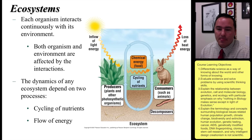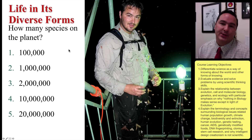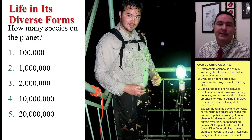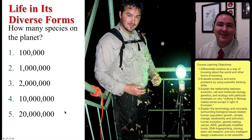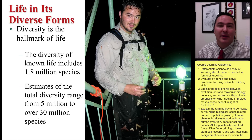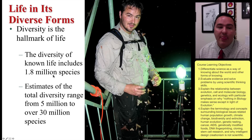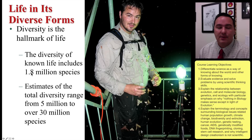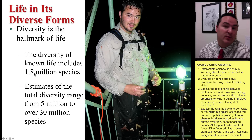Just think for a moment: how many species are alive on this planet right now? If you responded anywhere from one to two million, you were pretty close to the number of known species that we have described on this planet.